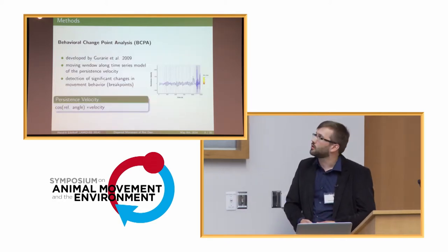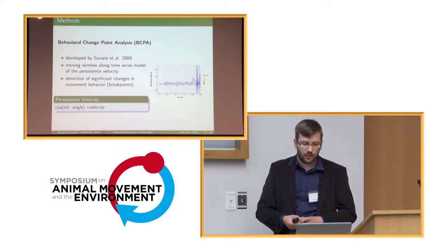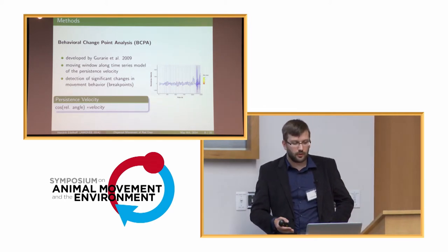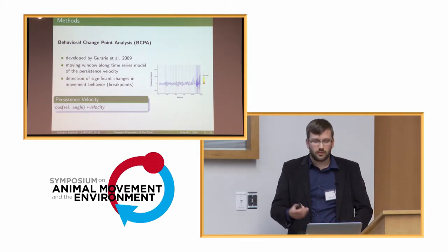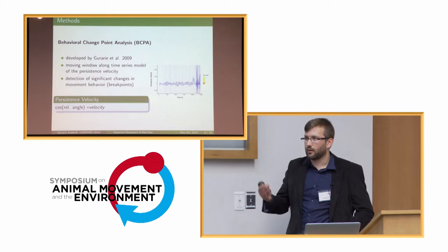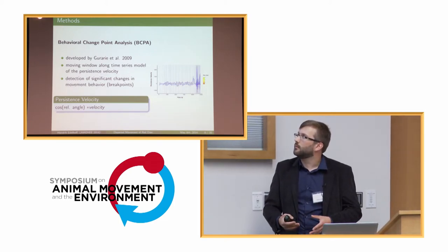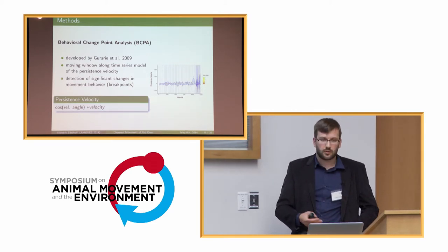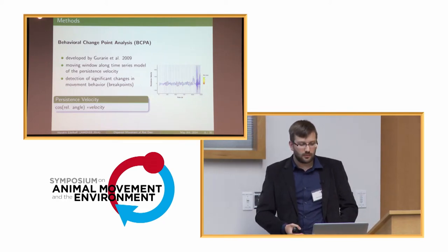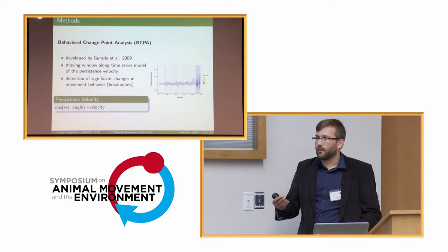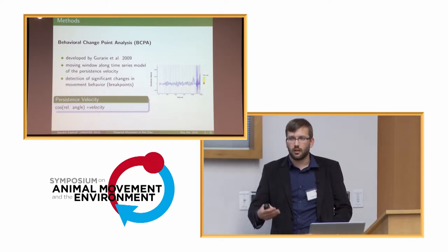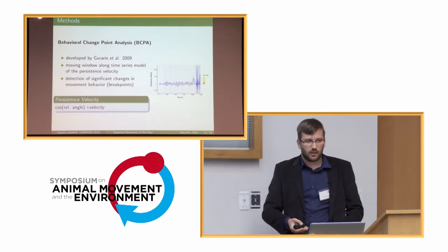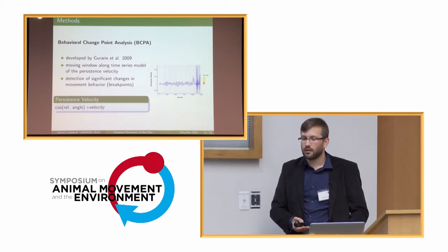All analyses were performed in R. The behavioral change point analysis (BCPA), developed by Gurarie and colleagues in 2009, is a moving window approach along a time series of the persistent velocity of an individual's path. Persistent velocity is the cosine of the relative angle between two steps times the velocity — it tells us how far the movement tends to keep heading in the same direction rather than turning back or in the opposite direction.